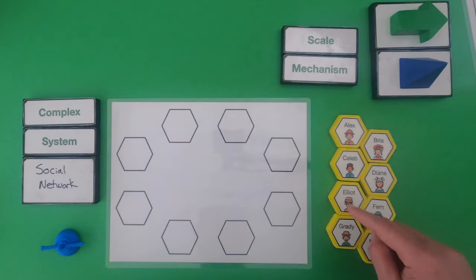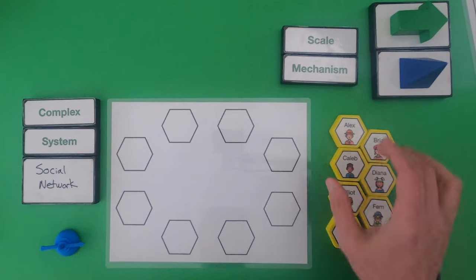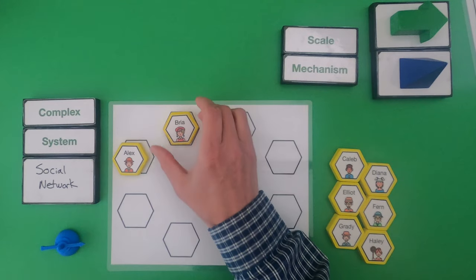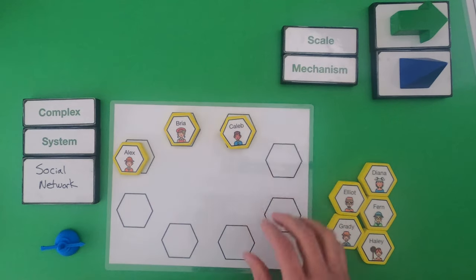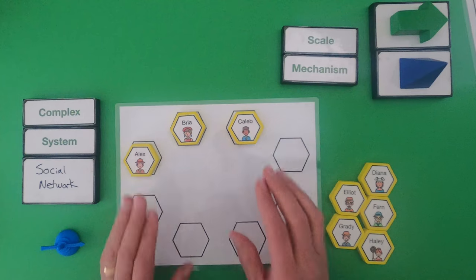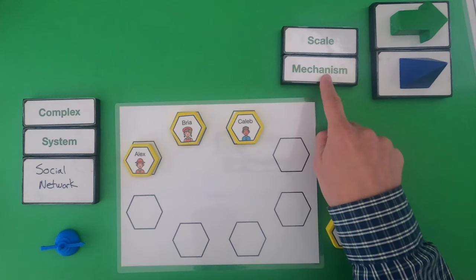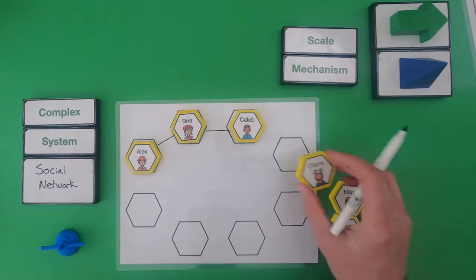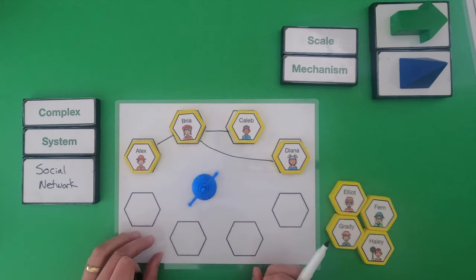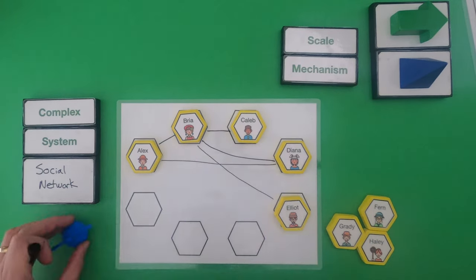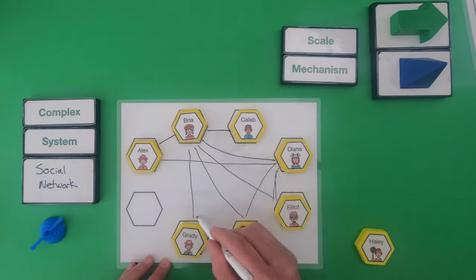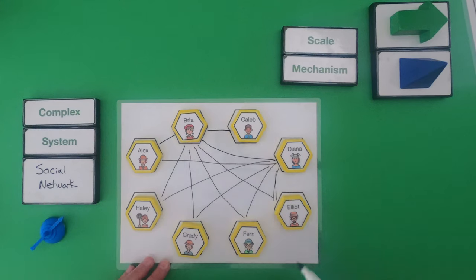So what I'm gonna do is I have these eight people. They're gonna join this social network over here. So we could put Alex here. We'll put Bria here. And then Caleb here. And what I want you to do is just watch me build this social network and figure out if you can figure out what's the scale mechanism or what are the rules that are allowing me to build this network.